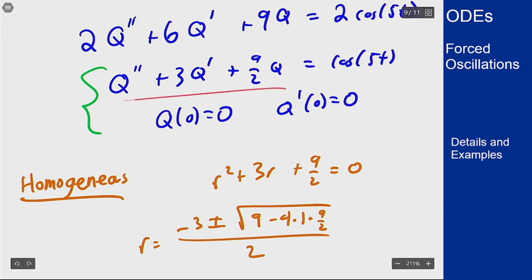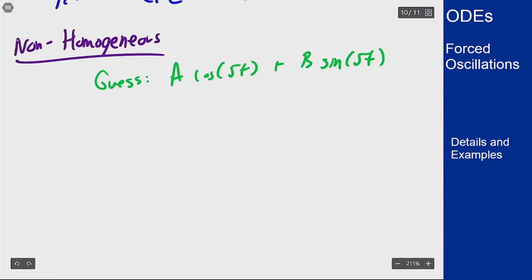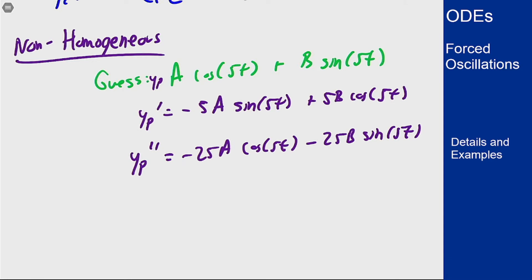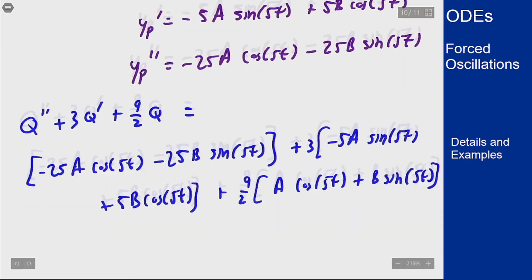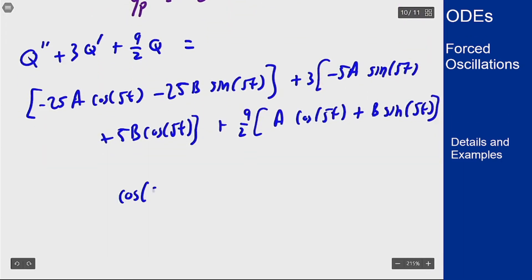I have my equation q double prime plus 3q prime plus 9/2 q. If I take derivatives of this I can plug that into my equation and then collect like terms and simplify. We'll end up with cosine of 5t multiplied by negative 25A plus 15B plus 9/2 A and sine of 5t multiplied by negative 25B minus 15A plus 9/2 B.